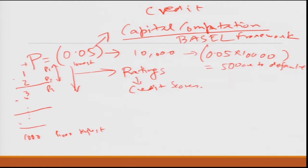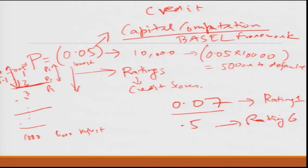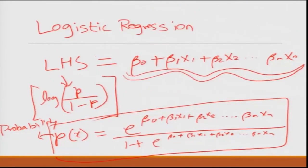In practice, if a customer's score was 0.07 and the cutoff for a range of 0 to 0.1 had an average of 0.05, you would classify him as rating class 1. If his probability was 0.5 he may belong to class 6. This is how decisions are typically taken in financial institutions — the seed is this calculation from the logistic regression model.